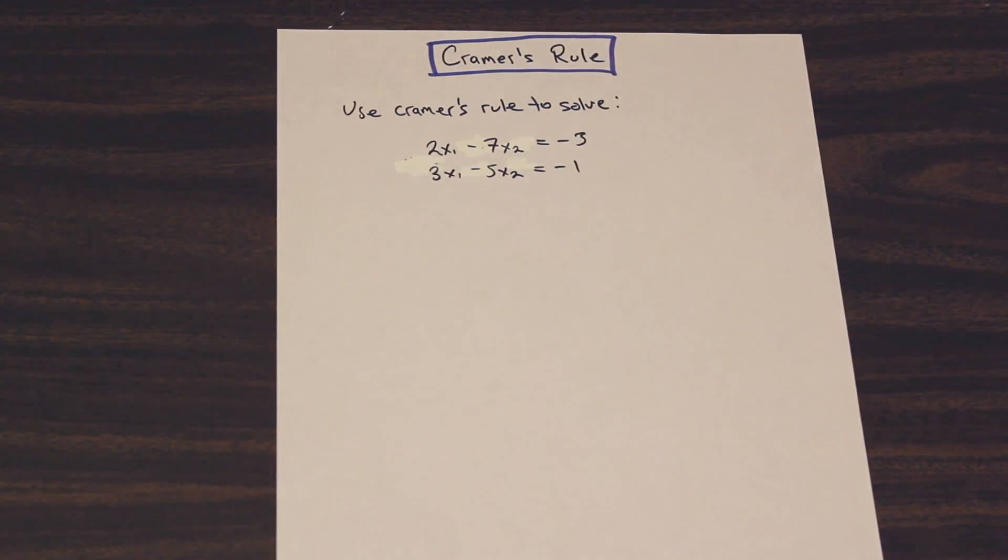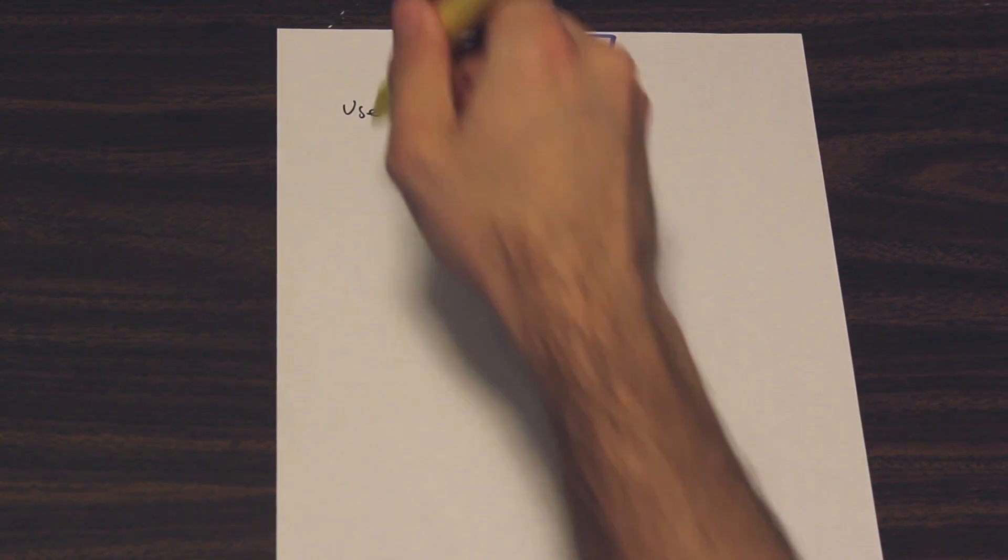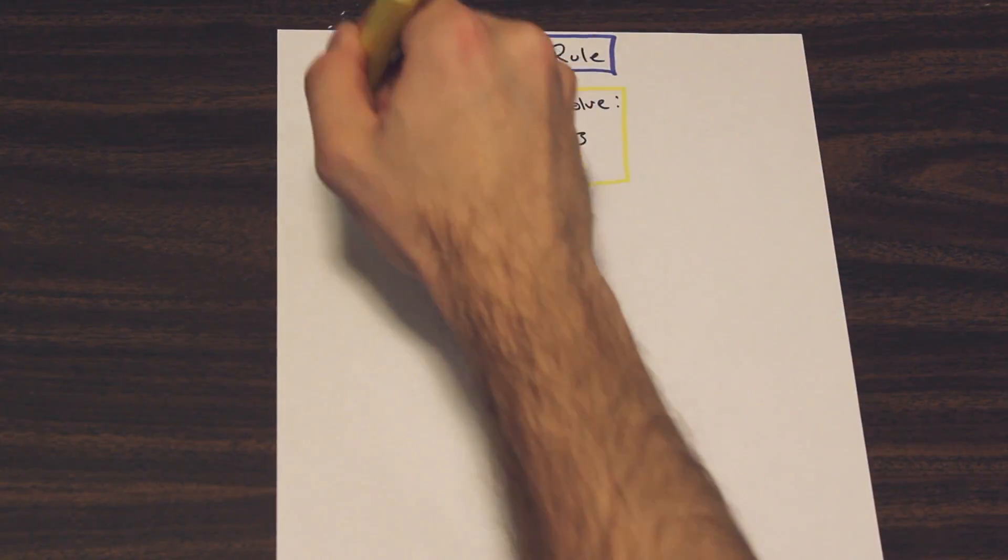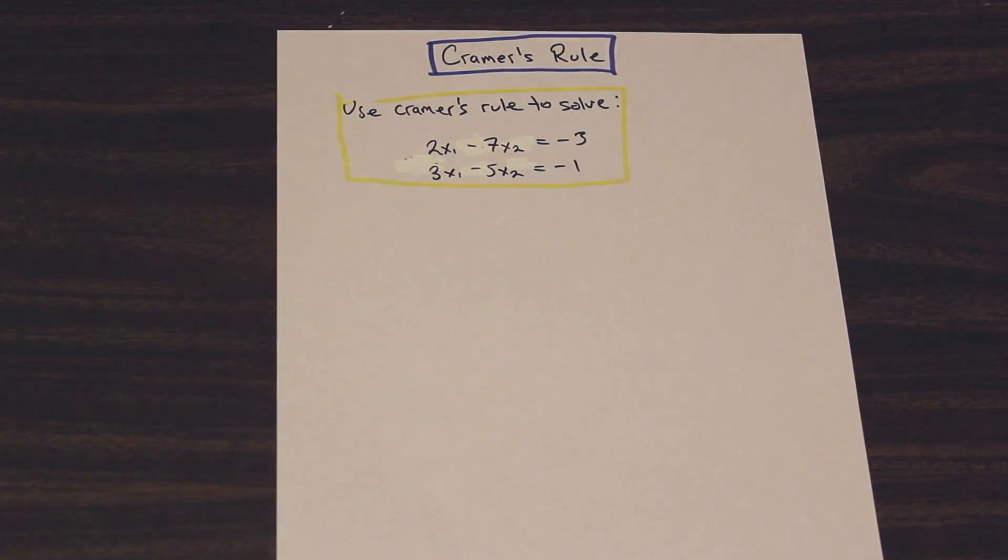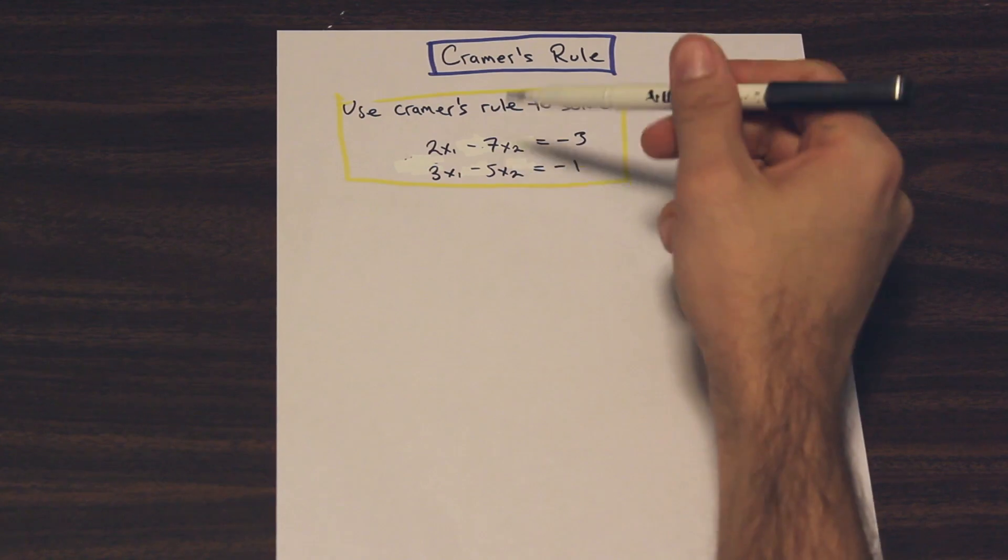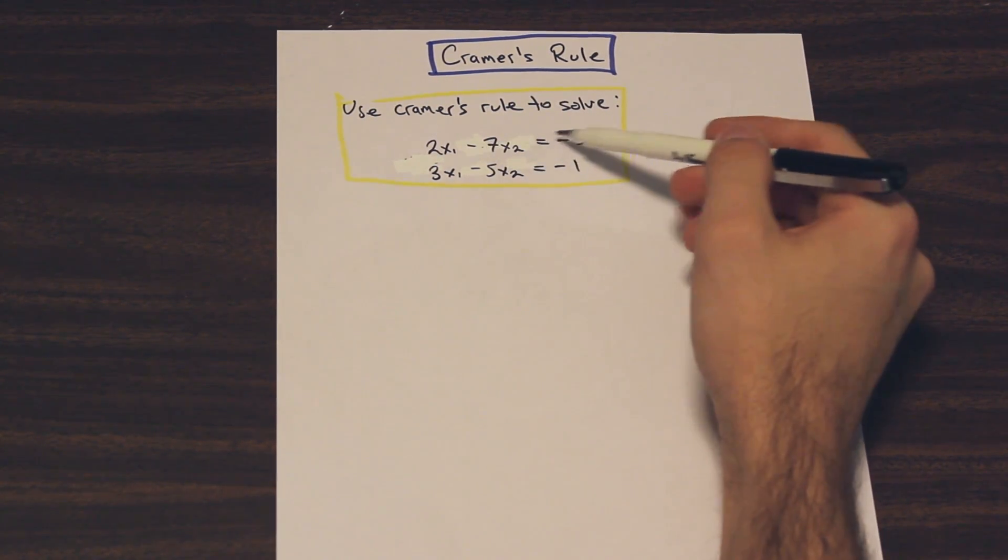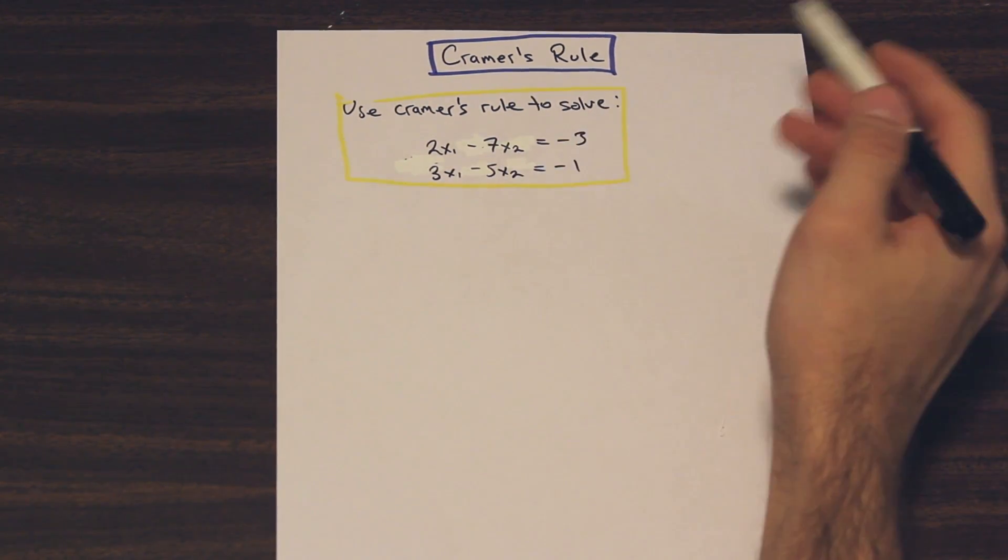Okay, so we have the question here. I'll just make that yellow so you guys can distinguish what I'm doing. So we have use Cramer's rule to solve, and then we have a system of linear equations here. We have 2x1 minus 7x2 equals negative 3, and 3x1 minus 5x2 equals negative 1.